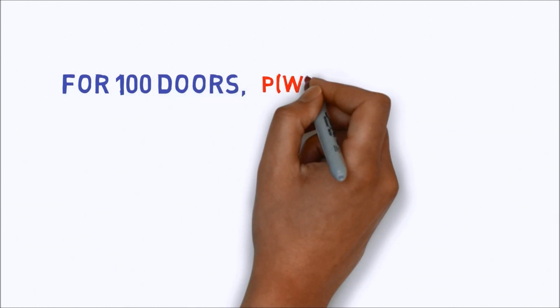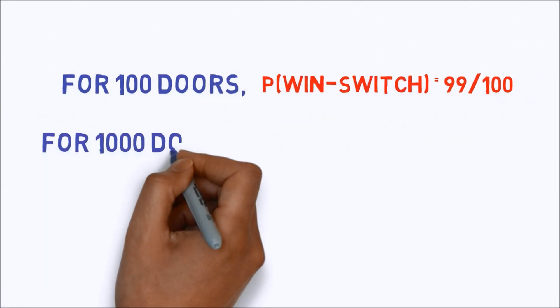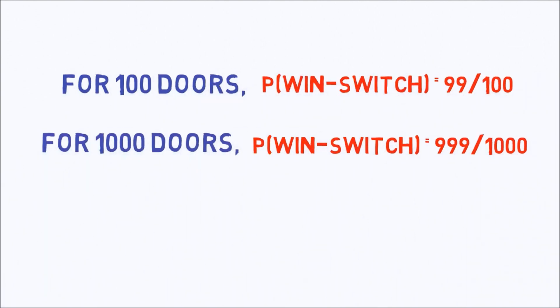Similarly, with 100 doors, it will be 99 by 100. With 1000, it will be 999 by 1000, and so on.